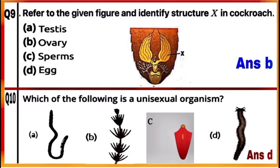Question 10: Which of the following is a unisexual organism? The organism shown in Figure D is Nereis; it is unisexual or dioecious, where both sex organs are present in different individuals. So the correct answer is D.